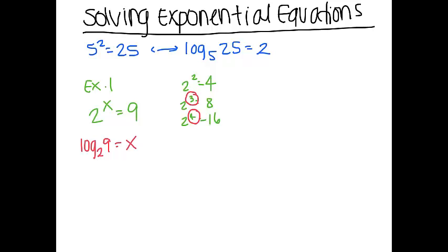Now, log base 2 of 9, depending on what kind of calculator you have, you might be able to plug that in exactly the way that it is. So if you have a type of calculator that doesn't have all the bases, yours probably just has base 10 and ln. So if you want to rewrite this so you can use your calculator, you're going to write log 9 over log 2. That also is the same thing as ln of 9 over ln of 2.